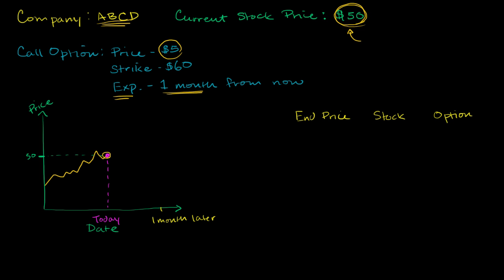And it gives you the option to buy the stock for $60 a share. And the type of option that I've just described is called an American option.